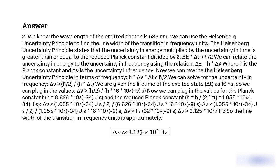h · Δν · Δt ≥ ℏ/2. We can solve for the uncertainty in frequency: Δν ≥ ℏ/2 / (h · Δt). We are given the lifetime of the excited state: Δt = 16 ns. So we can plug in the values.